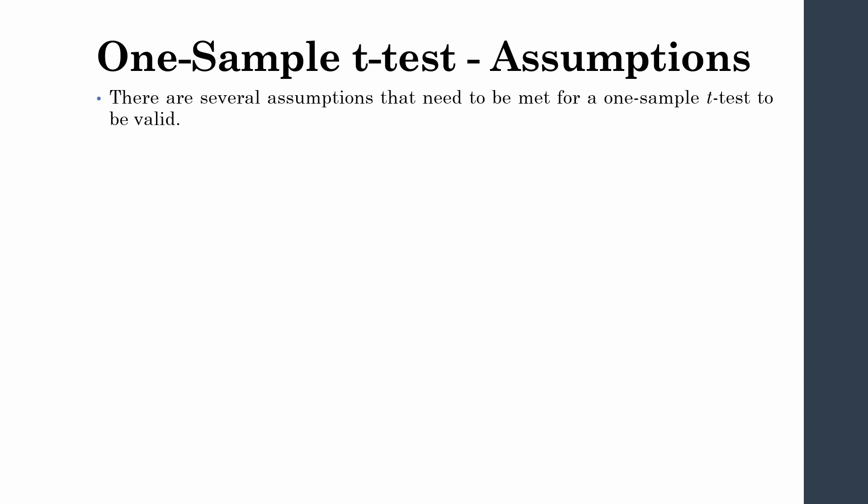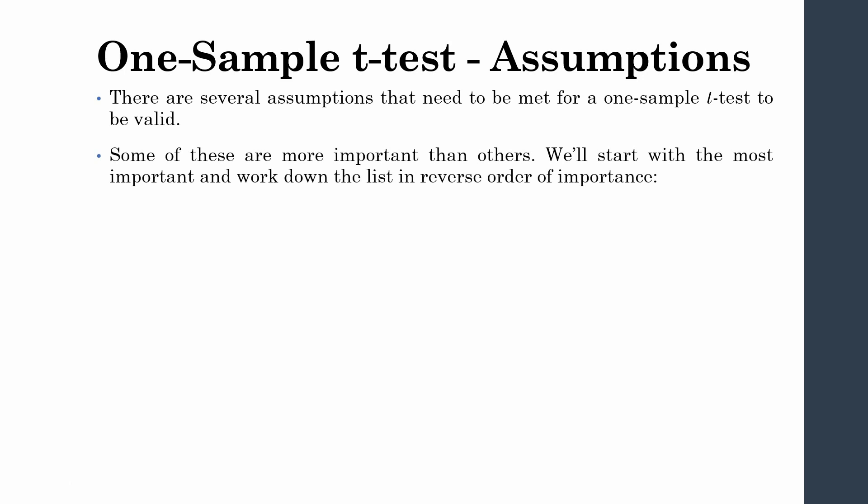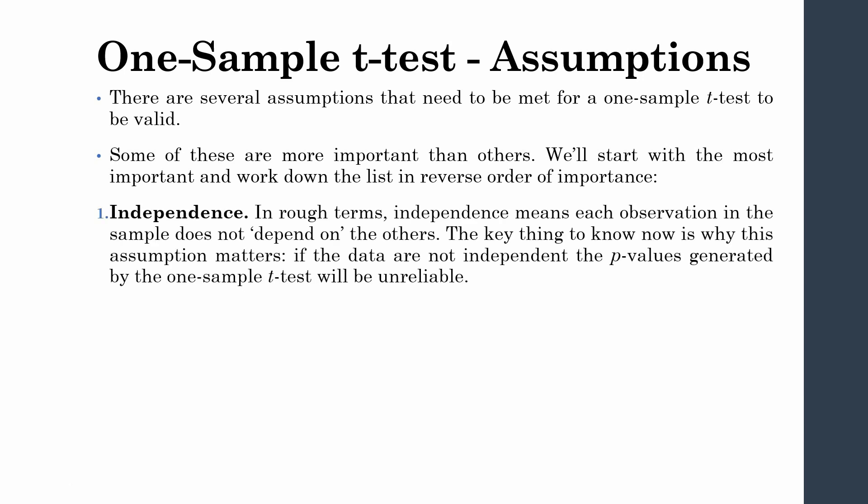There are several assumptions that need to be met for the one-sample t-test to be valid. Some are more important than others. We will start with the most important assumption and work down the list in reverse order of importance.